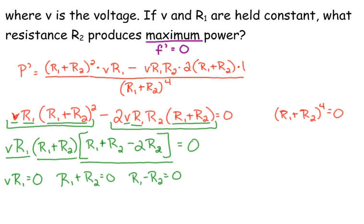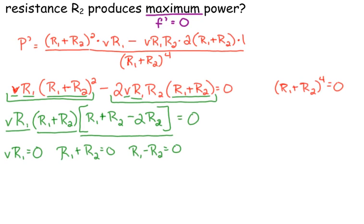Now this is where practicality comes into play. V and R1 are held constants. It makes no sense for the voltage to be 0. It makes no sense for resistor 1 to be 0. So that first expression right there really makes no sense. V times R sub 1 should not be 0, because your voltage is definitely not going to be 0. There's no point in having a resistor there if it's equal to 0, because the resistor is supposed to reduce the current.